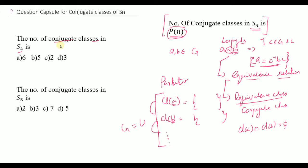For S4, N is equal to 4, so we need P(4) — the number of partitions of 4. The partitions are: 4 itself; 3 plus 1 equals 4; 2 plus 2 equals 4; 2 plus 1 plus 1 equals 4; and 1 plus 1 plus 1 plus 1 equals 4.